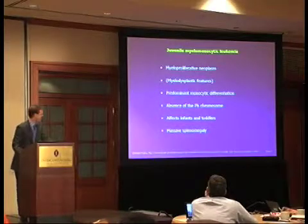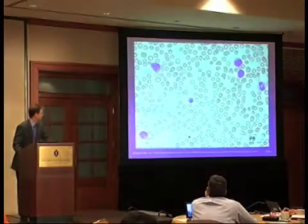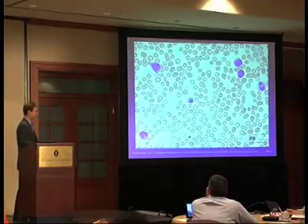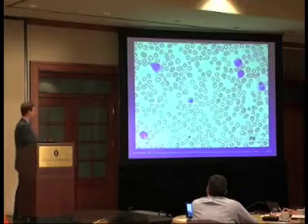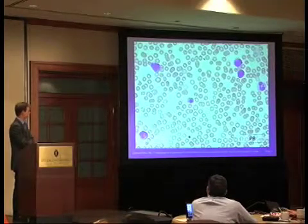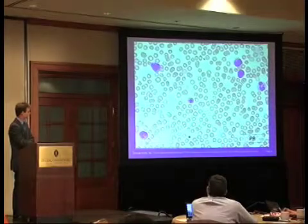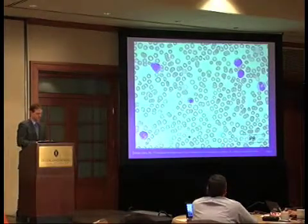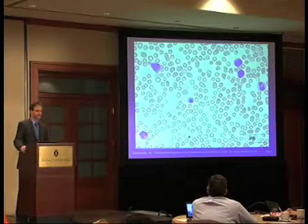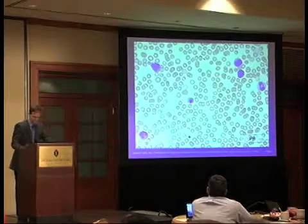A typical clinical feature is massive splenomegaly. Here's an example of what JMML looks like in the peripheral blood. You have the occasional blast, some dysplastic monocytes, and an erythroid precursor. The occurrence of erythroid or myeloid precursors in the periphery is also typical of JMML.